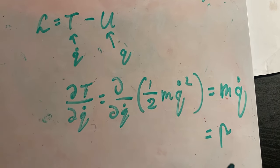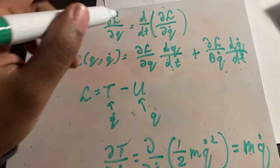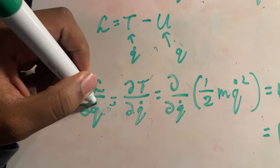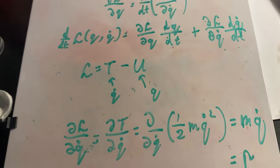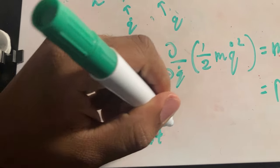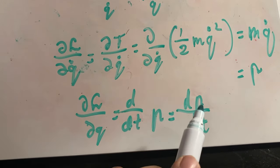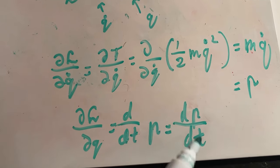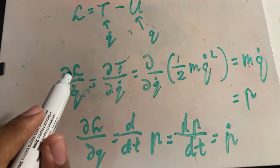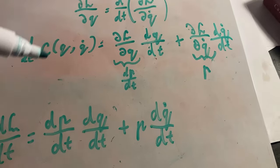We can also get an expression for dL/dq by plugging p into the Euler-Lagrange equation, giving dL/dq = d/dt(p) = p-dot, the time derivative of canonical momentum. So we have two results: dL/dq = p-dot and dL/dq-dot = p.